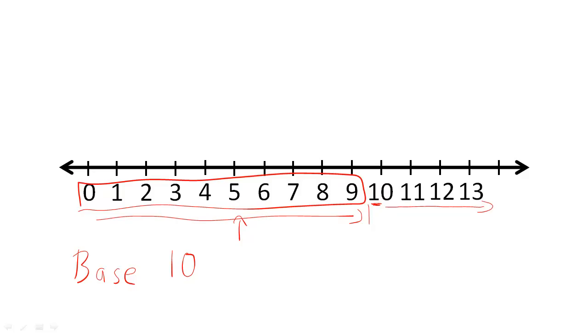As we described in the digital abstraction lecture, computers use a two-symbol alphabet. Therefore, they use base two represented numbers or binary represented numbers. We can combine the two symbols, one and zero, to represent an infinite set of numbers.